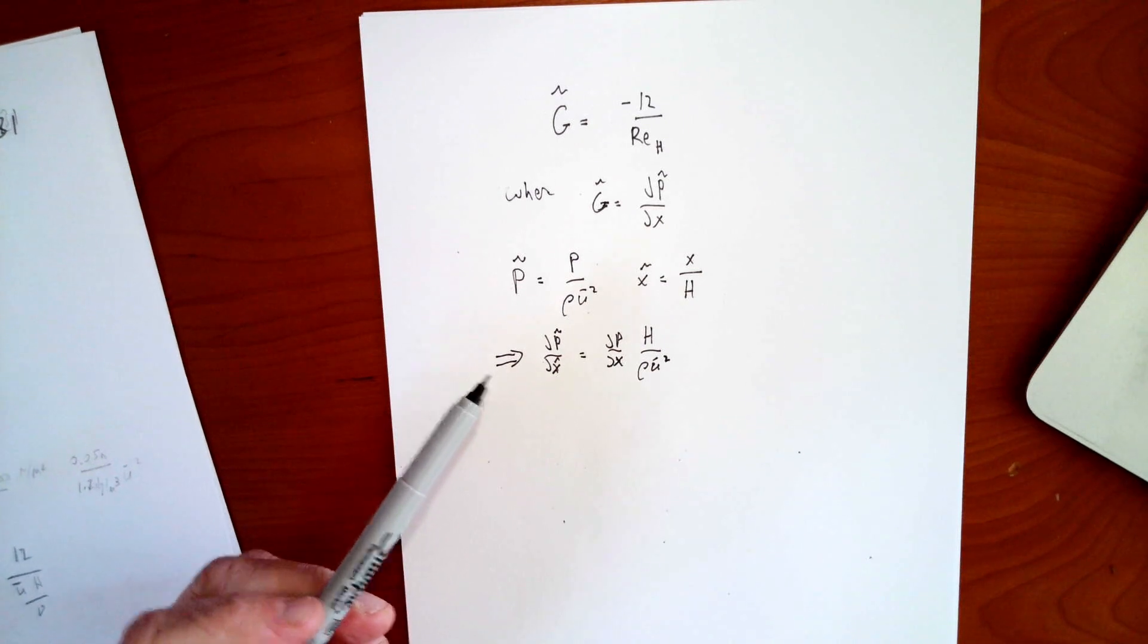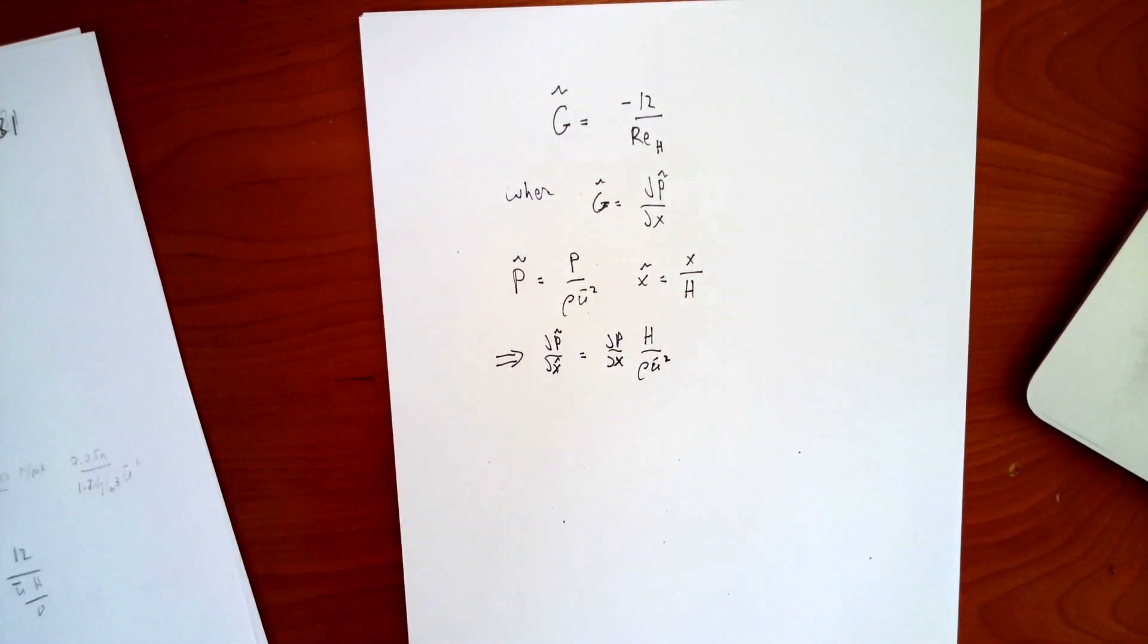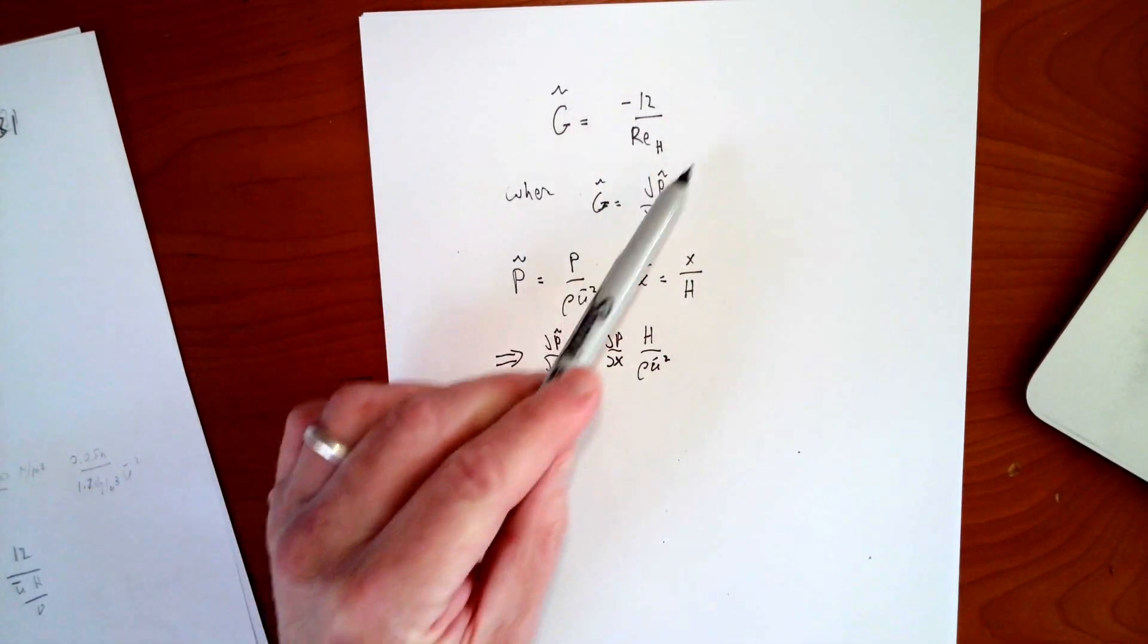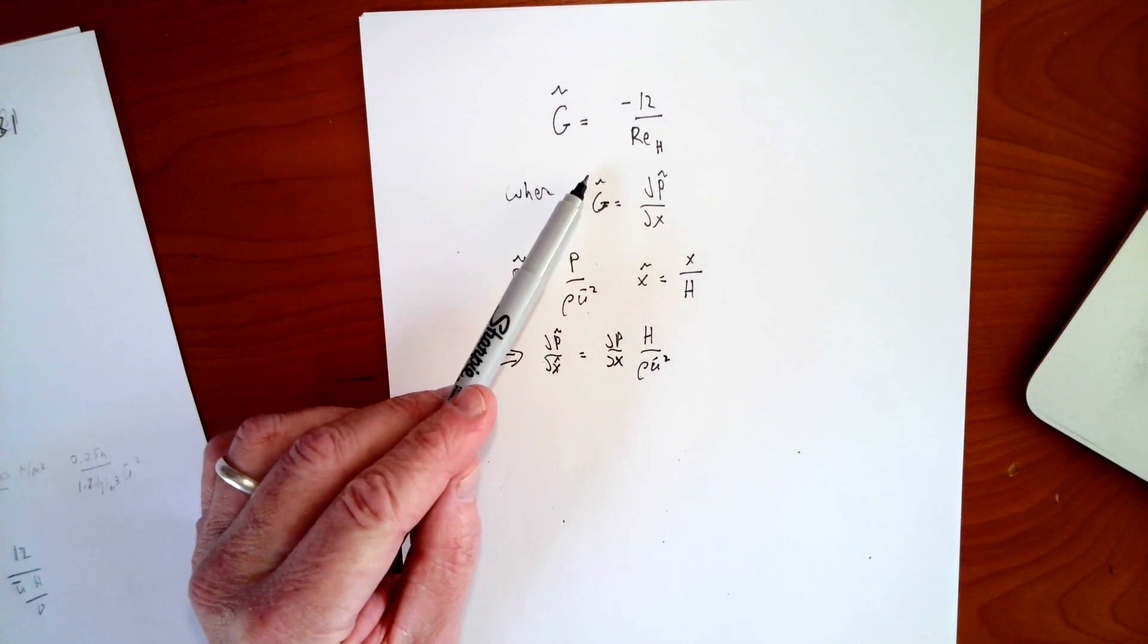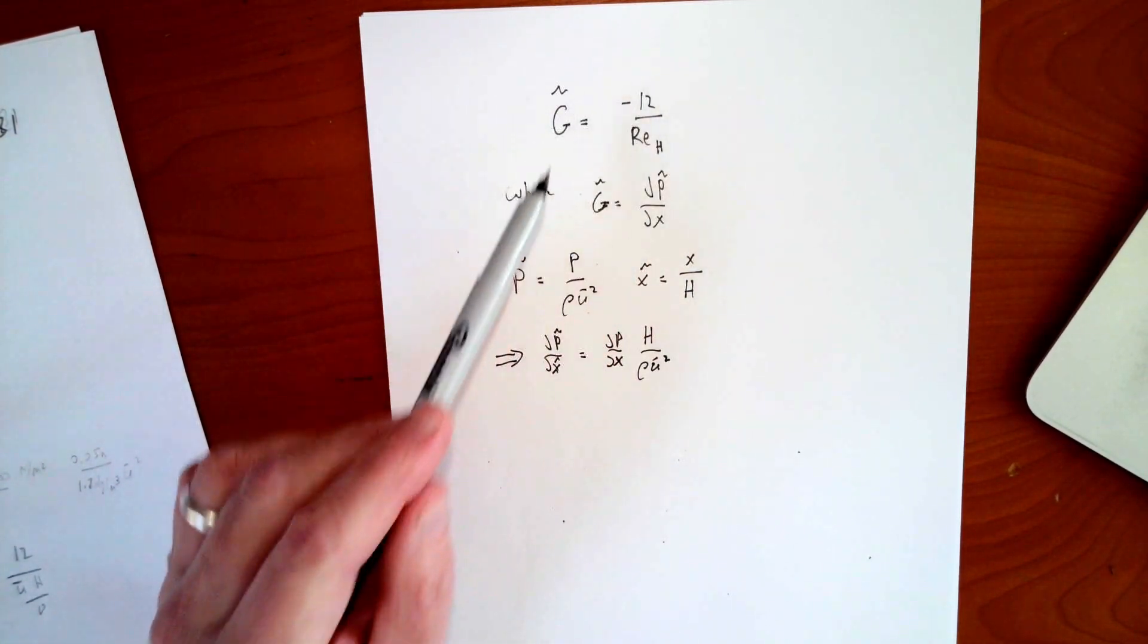So we're going to relate average velocity to the pressure gradient because that's the question that was asked. The first part A was to find the average velocity based on a known pressure gradient, essentially. You're given pressure differences in lengths, etc. So we're going to use this equation as our dimensionless equation that's going to relate those two things, and that's where we start.